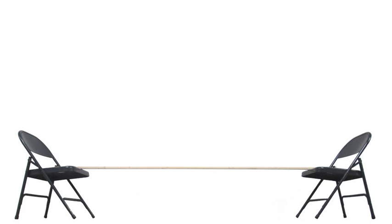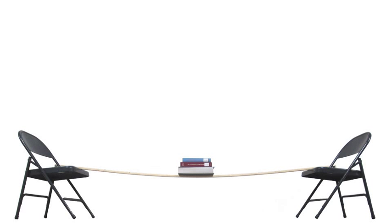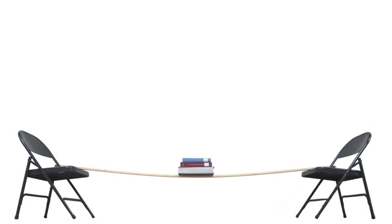Now, the student observes how the amount of load on a given beam affects the bending stress. The student was not surprised to find that a small load causes only slight deflection, or a low amount of bending stress, while a larger load placed in the same location causes more deflection in the beam, or greater bending stress. So, the heavier the load, the greater the bending stress, and the lighter the load, the lower the bending stress. Therefore, the student knows that bending stress is directly proportional to the load, P.